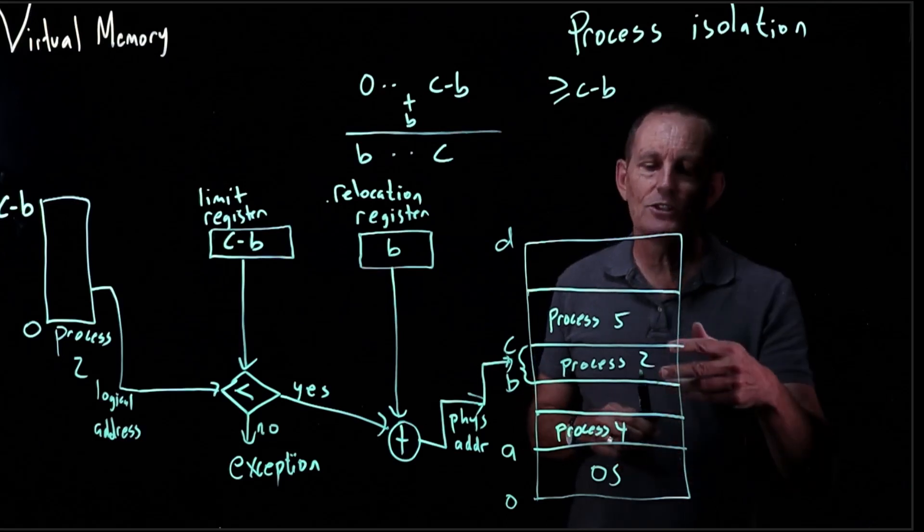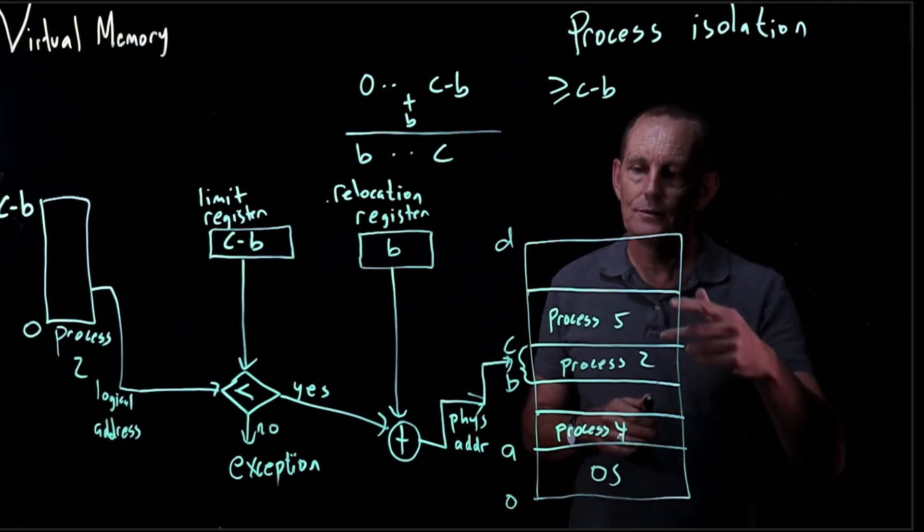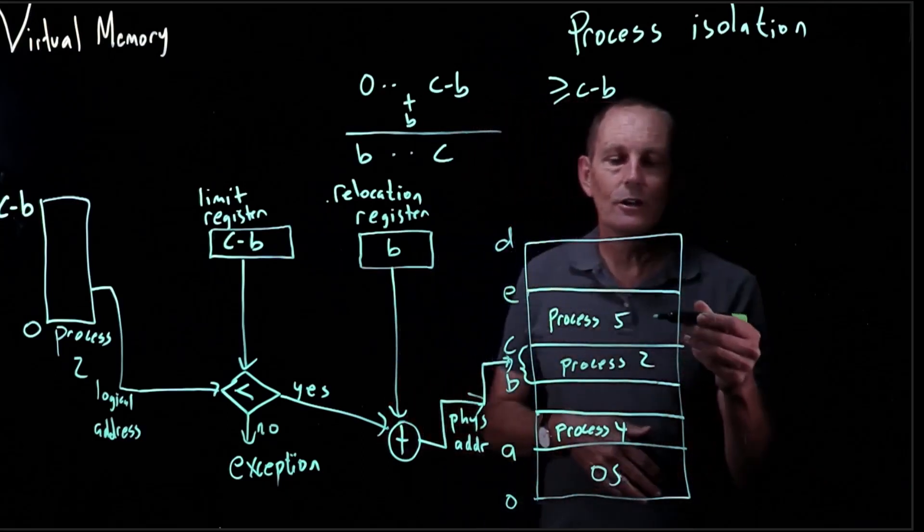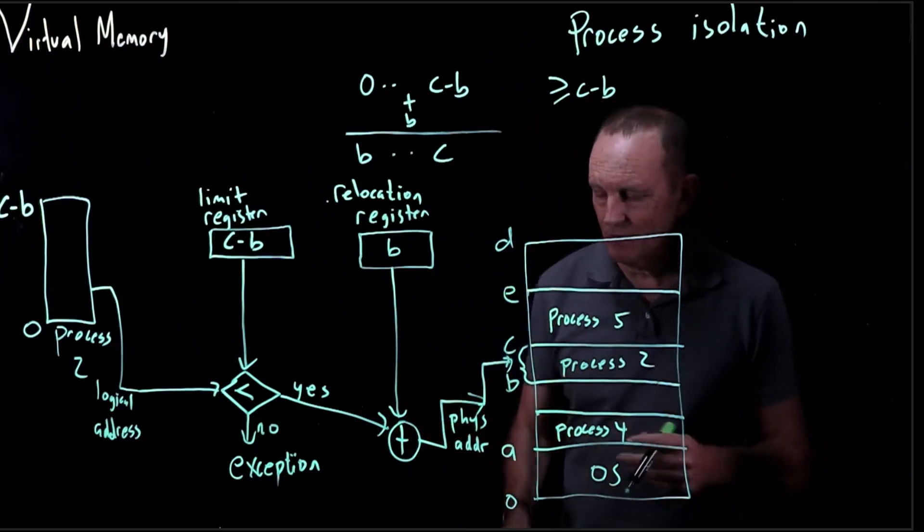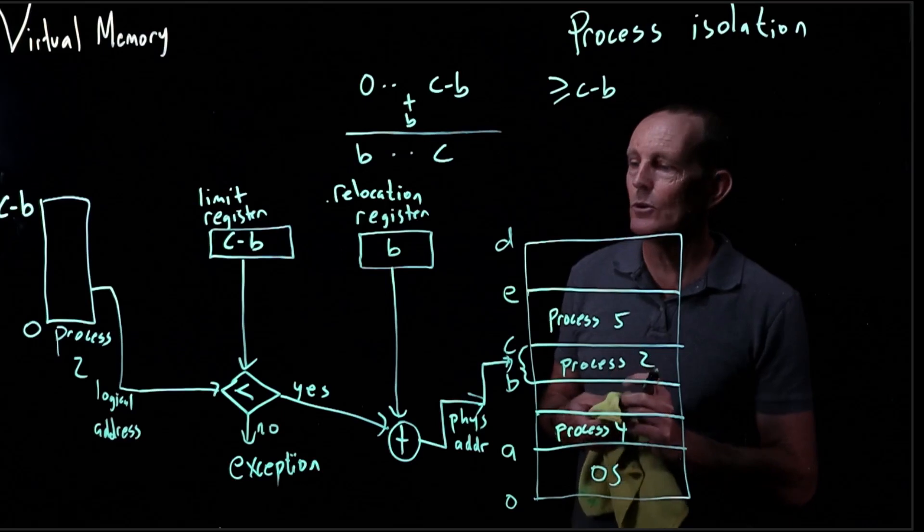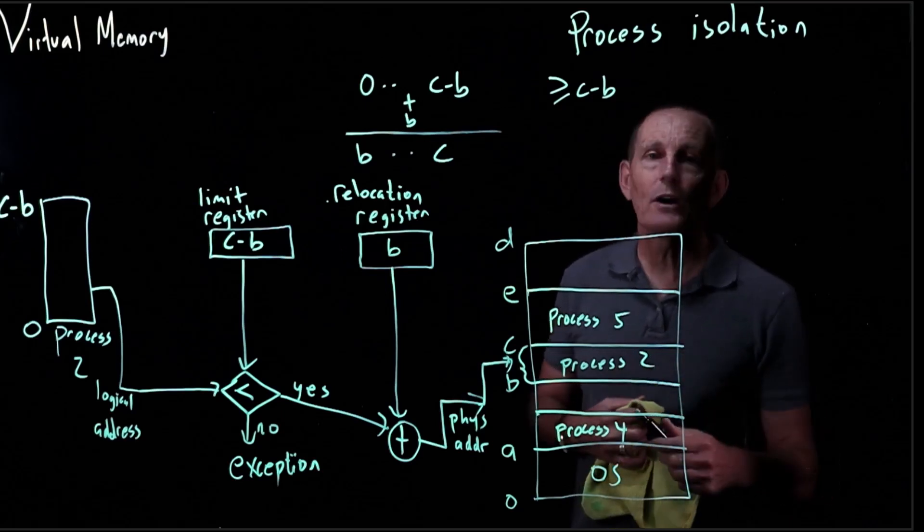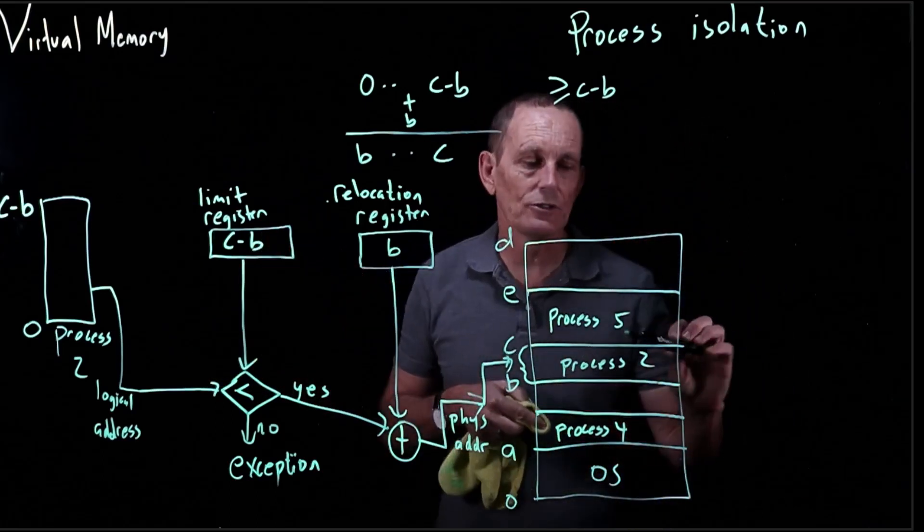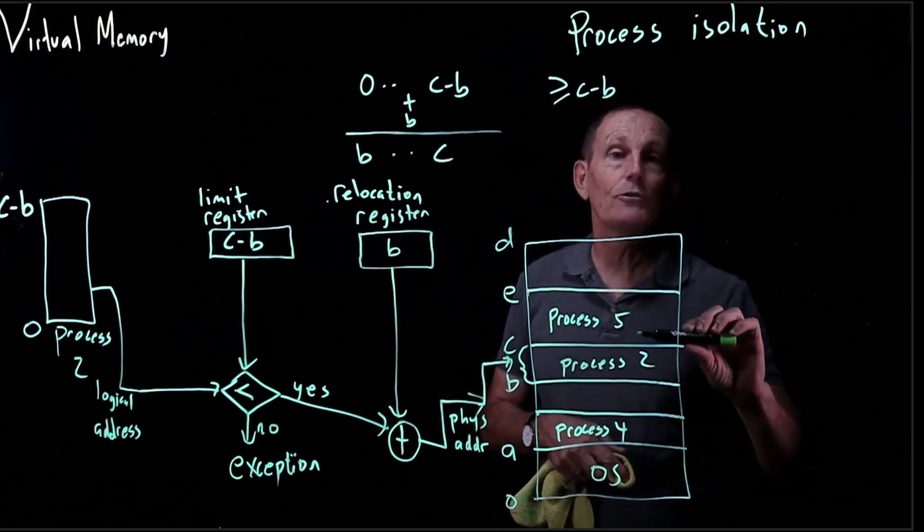And then let's say it switches from process two to process five. So this is E here. As process five comes in, the operating system, as part of this context switch, will restore the registers. Two of the registers that will be restored are the limit and relocation registers for process five.